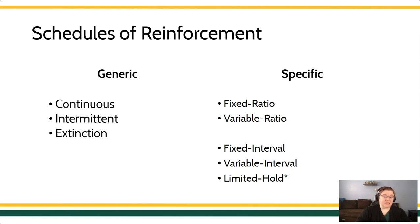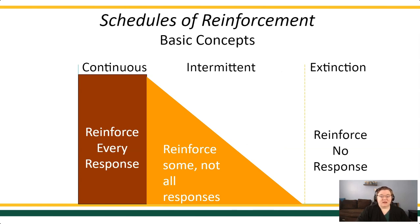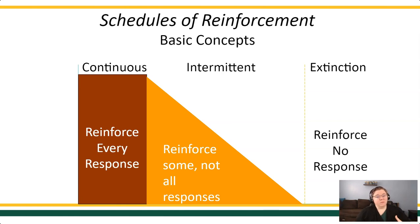Let's begin with those basic generic schedules. Continuous reinforcement refers to reinforcing every single response — every target behavior that occurs contacts the reinforcer. Every response earns the reinforcer. We also have the wide swath of intermittent reinforcement, which means some but not all responses contact reinforcement. That can range from every other response to 99% of responses, or even a very lean schedule where incredibly few responses contact reinforcement.